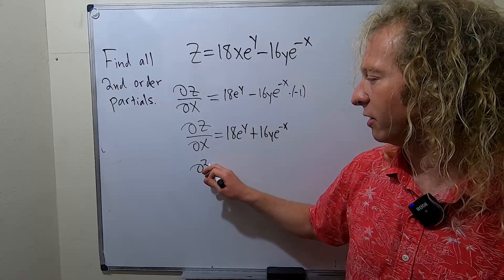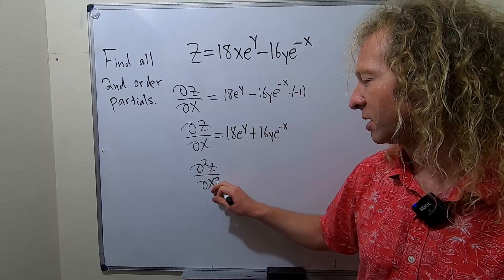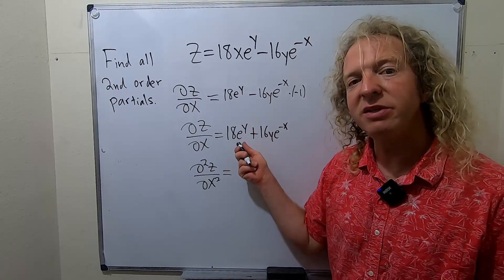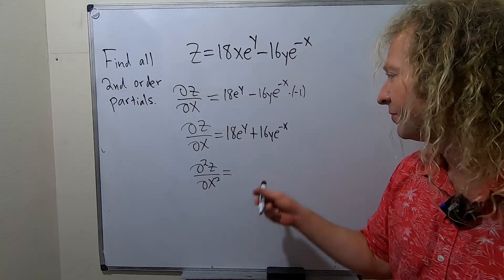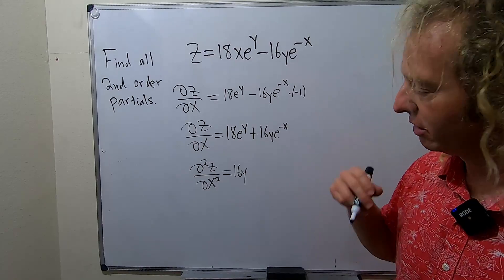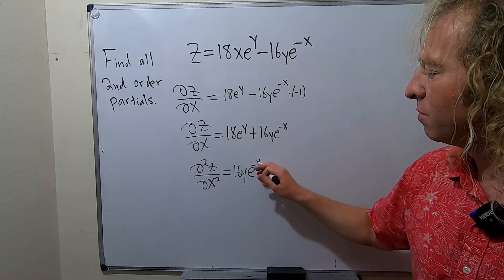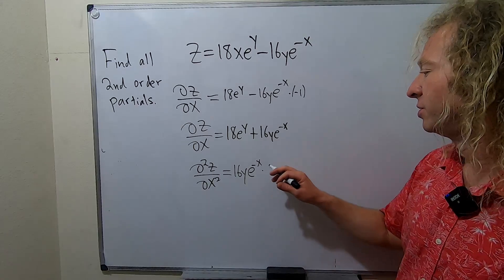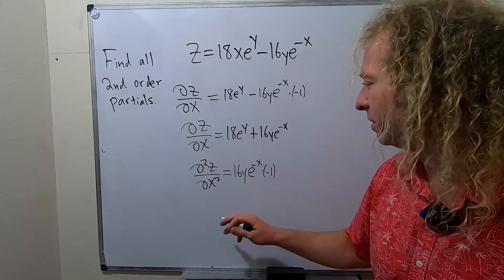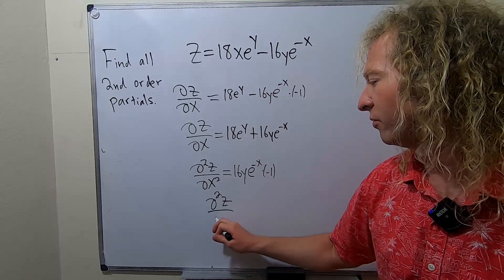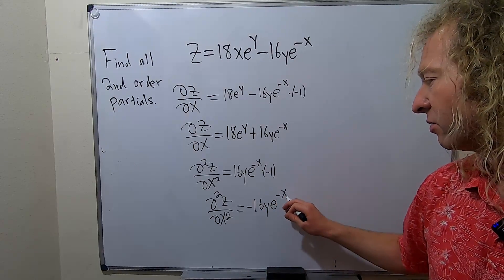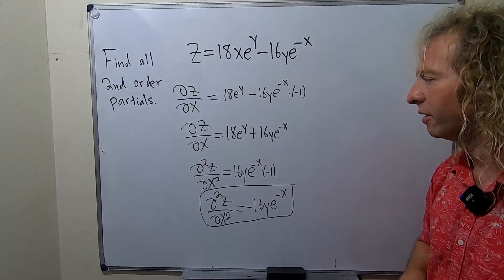Let's take the second-order partial of z with respect to x twice. We look at del z del x and take the partial again with respect to x. The 18e to the y term goes to 0 because it has a y — it vanishes. The 16y hangs out as a constant. The derivative of e to the negative x is e to the negative x times negative 1. So the second-order partial with respect to x is negative 16y e to the negative x.